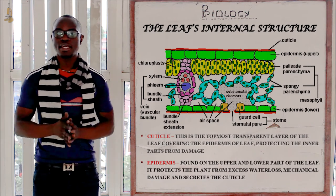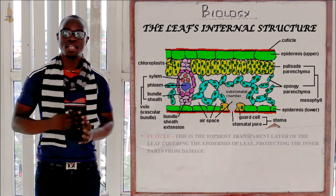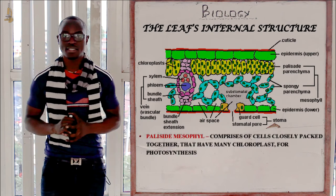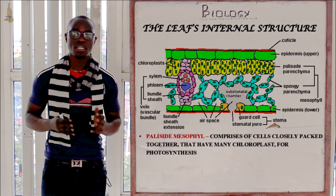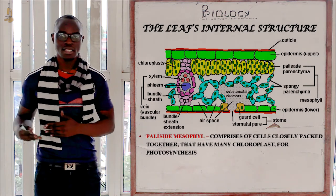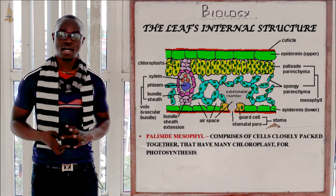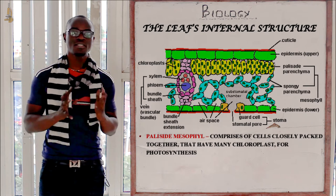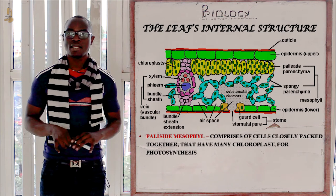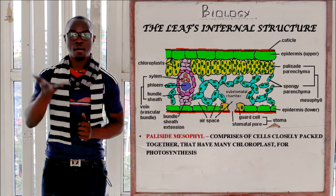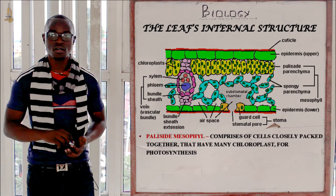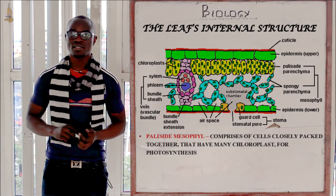After the epidermis we have the palisade mesophyll cells, or the palisade layer. The palisade layer comprises of cylindrical or cylindrical-like cells which mainly have the chloroplast. These cells are closely packed together and they are found on the upper parts of the leaf.